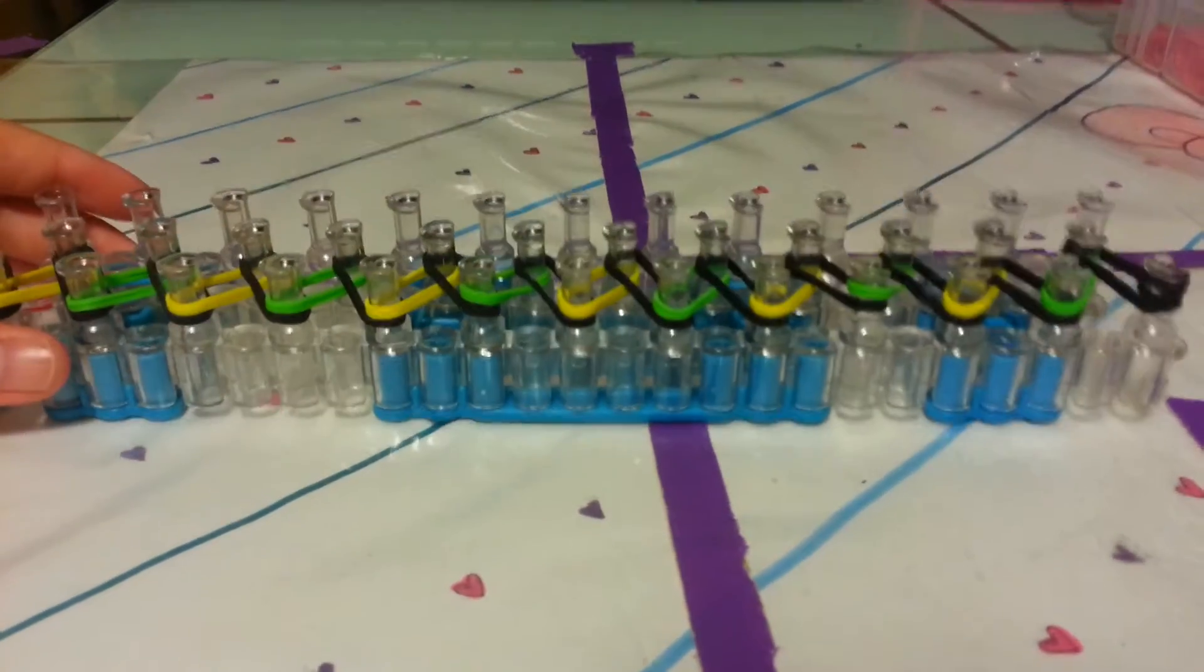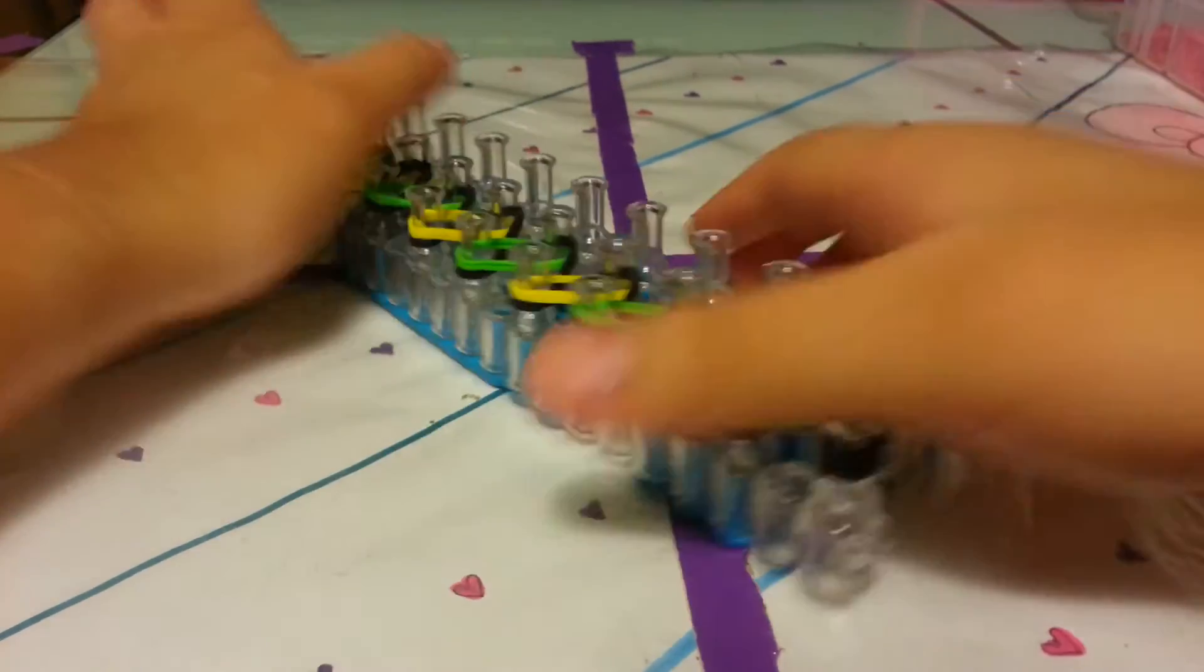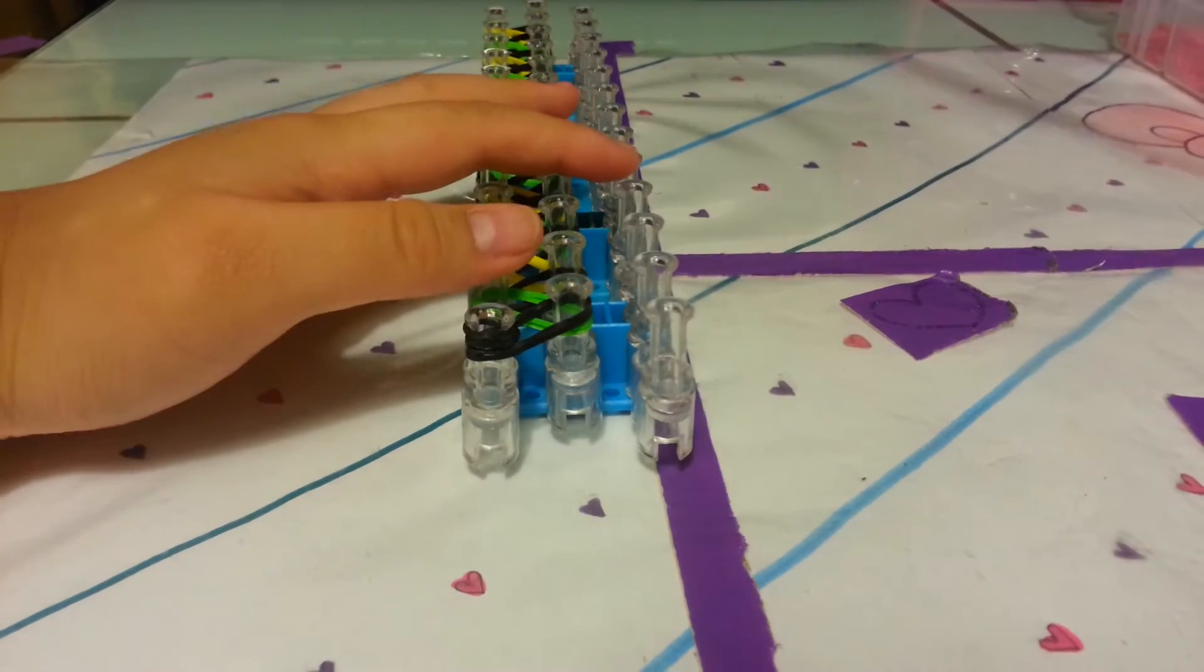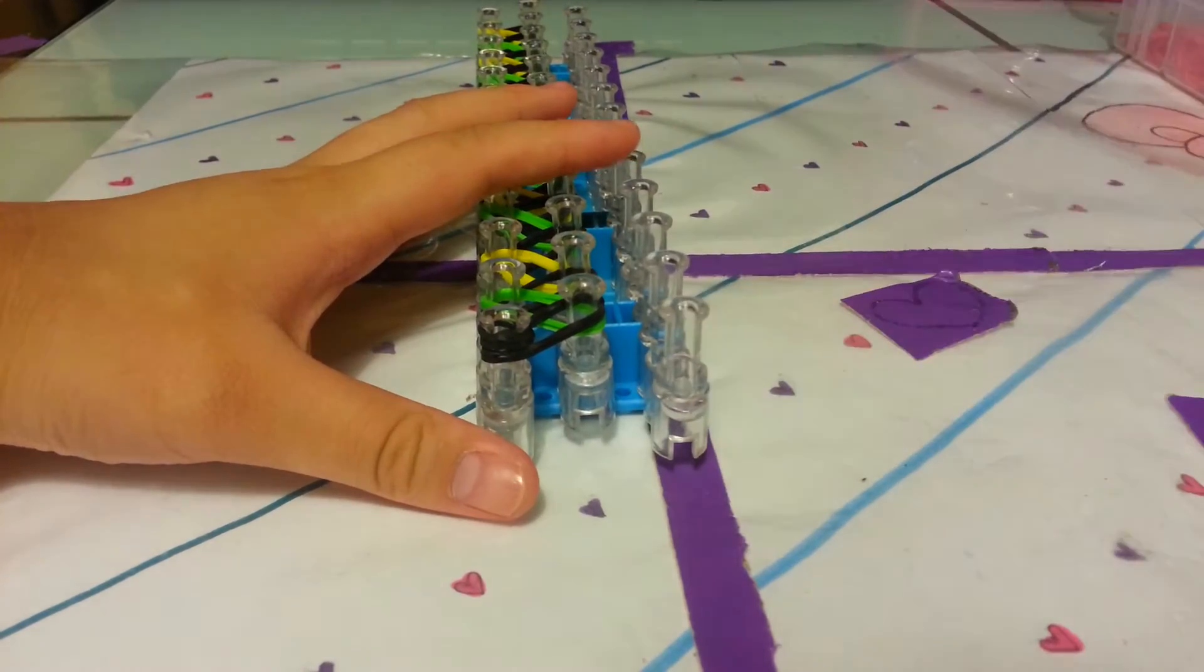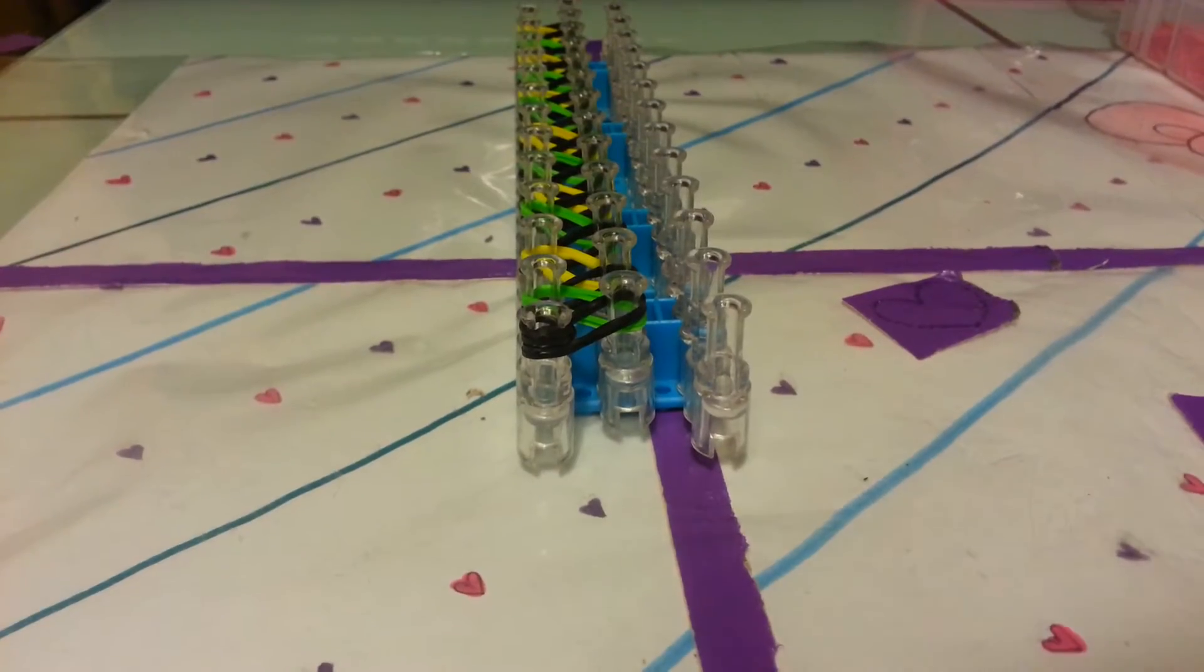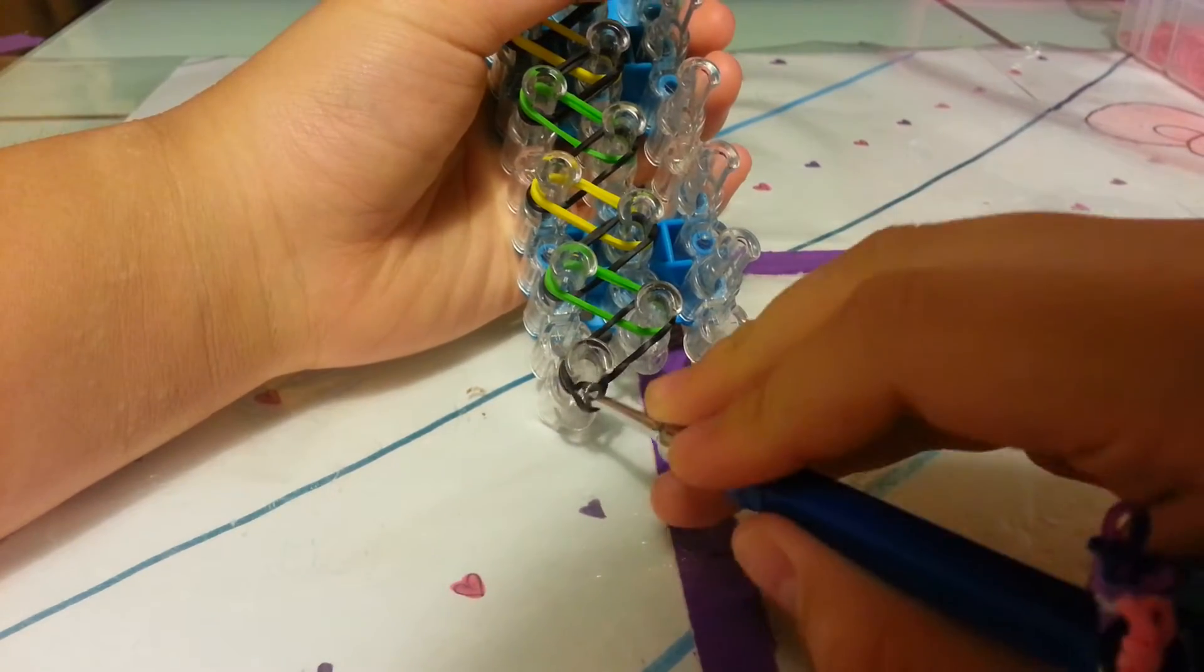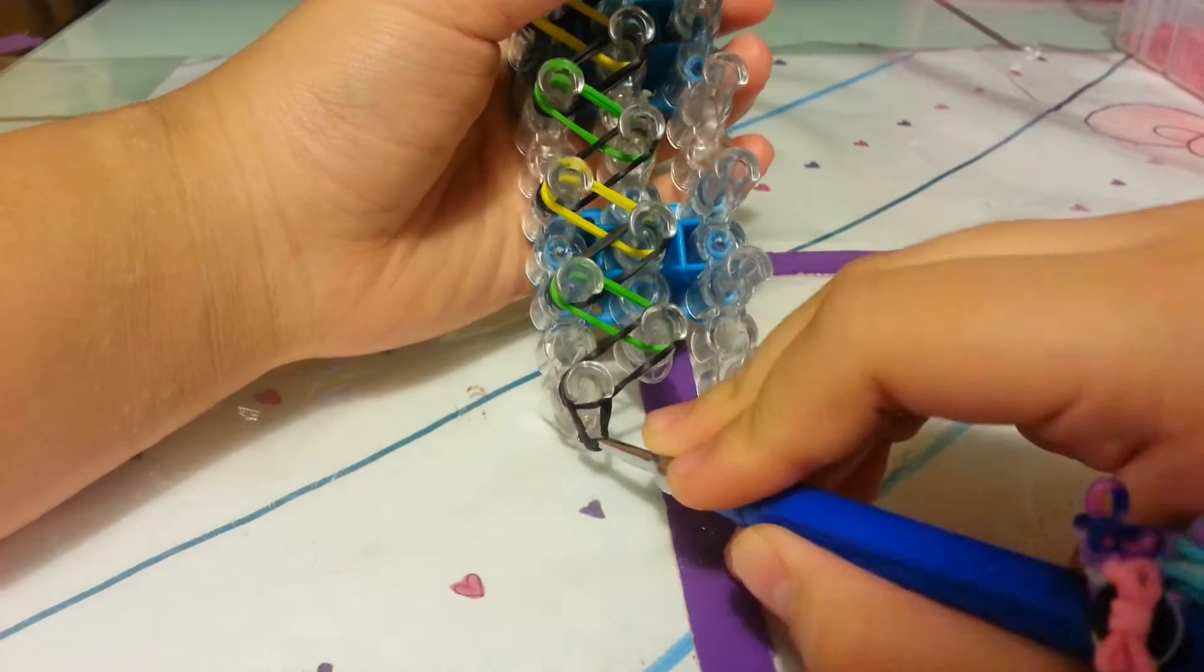Now you want to have your red arrow facing towards you. Let's start the hooking process. This is a very easy hooking process, it's very similar to the single chain. What you're going to do is pull the cap band back, grab this band.